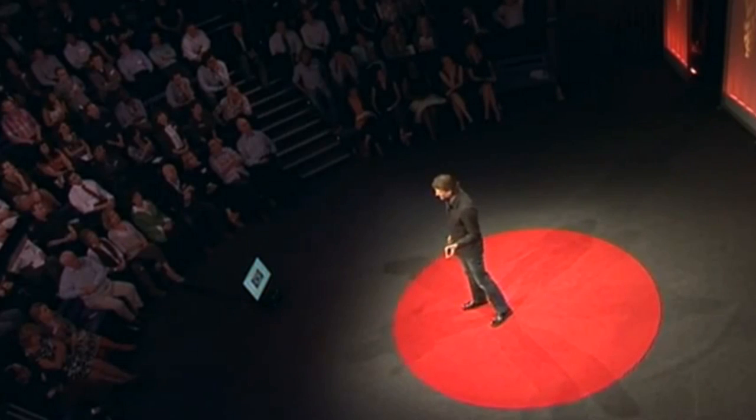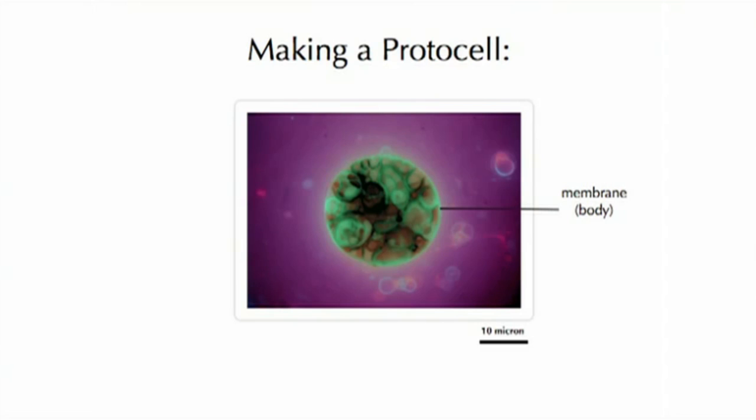This is how we can start to make a protocell. We use an idea called self-assembly: I can mix some chemicals together in a test tube, and these chemicals will start to self-associate to form larger and larger structures. On the order of tens of thousands to hundreds of thousands of molecules will come together to form a large structure that didn't exist before. In this particular example, I took some membrane molecules, mixed them together in the right environment, and within seconds they form these rather complex and beautiful structures. These membranes are also quite similar morphologically and functionally to the membranes in your body, and we can use them to form the body of our protocell.